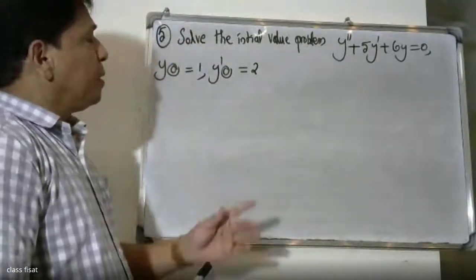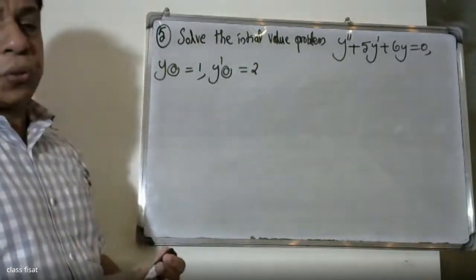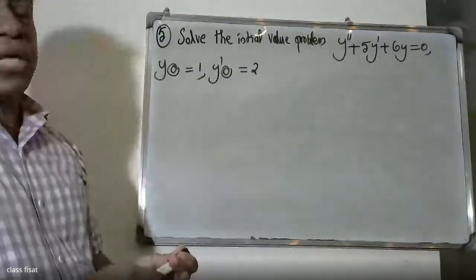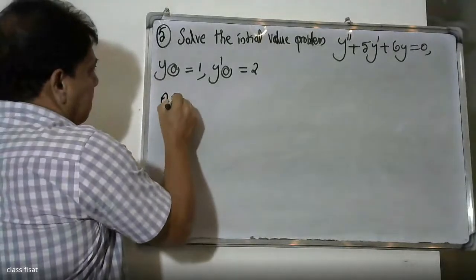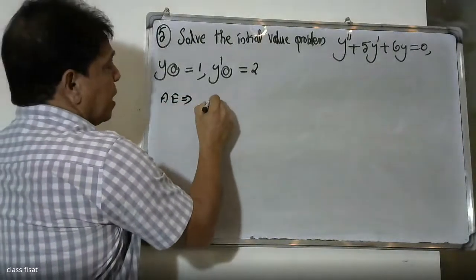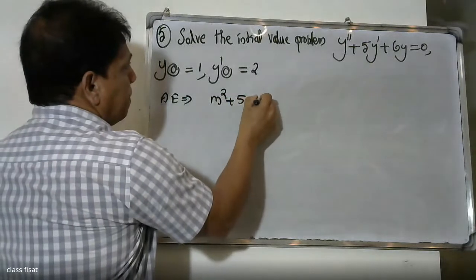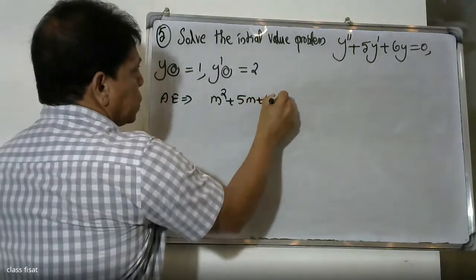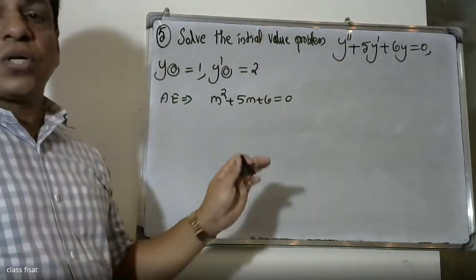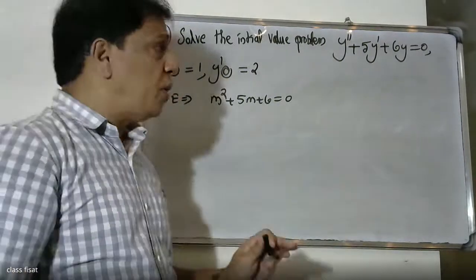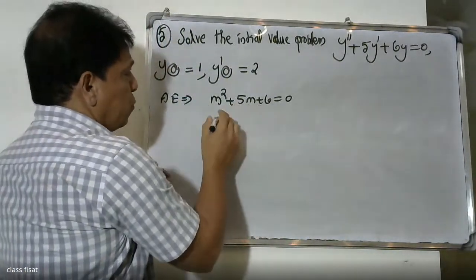For this problem, y double dash plus five y dash plus six y equals zero, we first write the auxiliary equation. The auxiliary equation is m squared plus five m plus six is equal to zero.